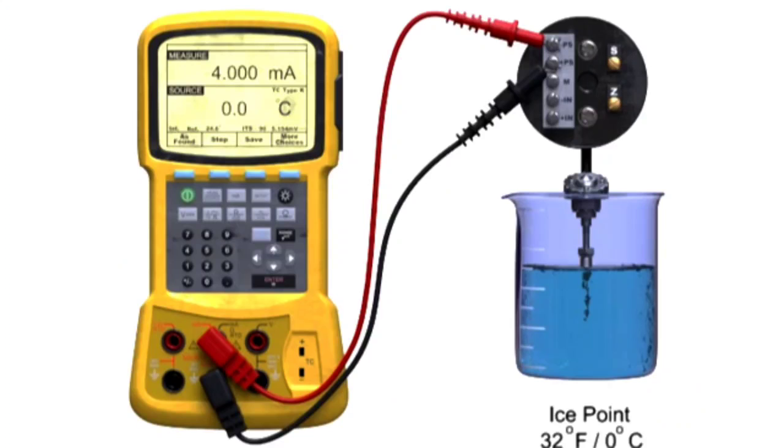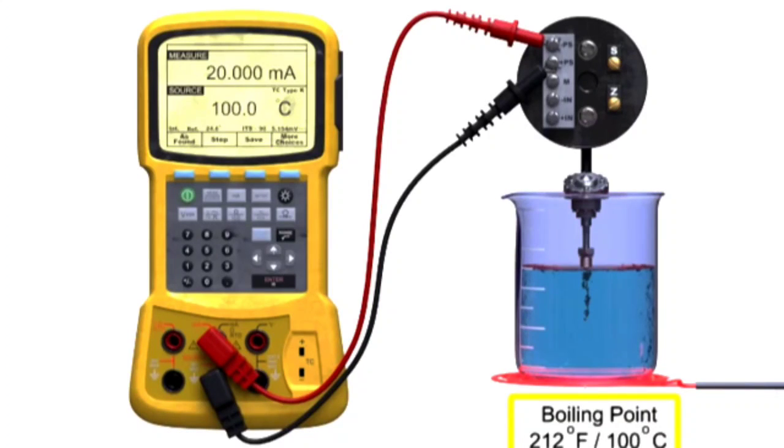To perform the measurement, the process calibrator is programmed to the specific RTD type. The accuracy is determined by measuring the temperature of water at 0 degrees Celsius and 100 degrees Celsius, representing freezing and boiling points of water.